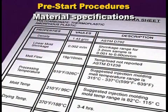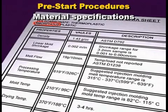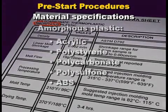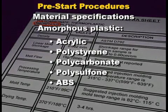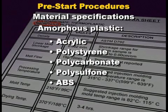For example, the spec sheet will list whether or not the plastic raw material is crystalline or amorphous. Some examples of plastics that are amorphous are acrylic, polystyrene, polycarbonate, polysulfone, and ABS.